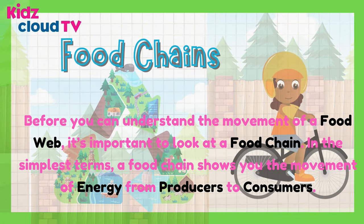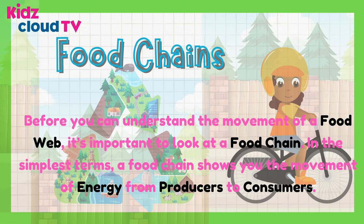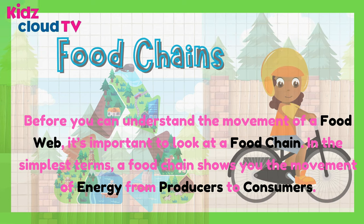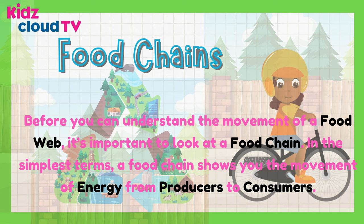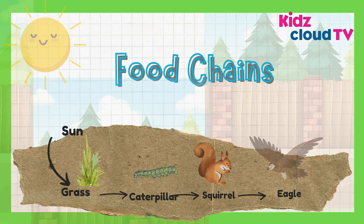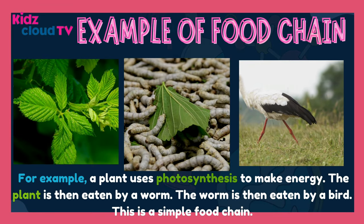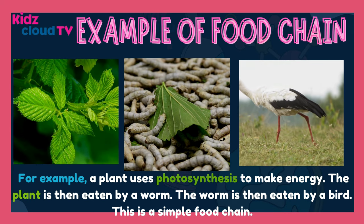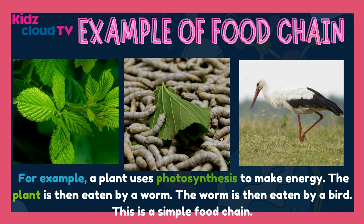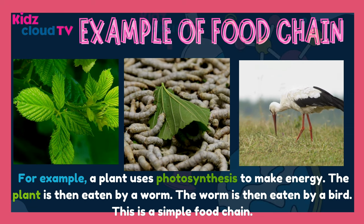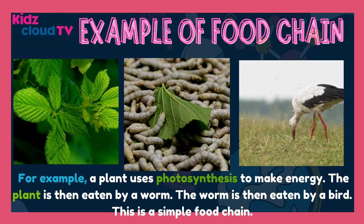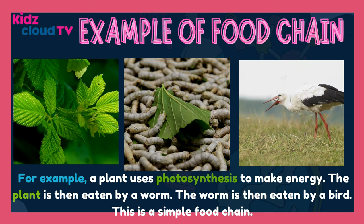Food Chains: Before you can understand the movement of a food web, it's important to look at a food chain. In the simplest terms, a food chain shows you the movement of energy from producers to consumers. For example, a plant uses photosynthesis to make energy, the plant is then eaten by a worm, and the worm is then eaten by a bird. This is a simple food chain.